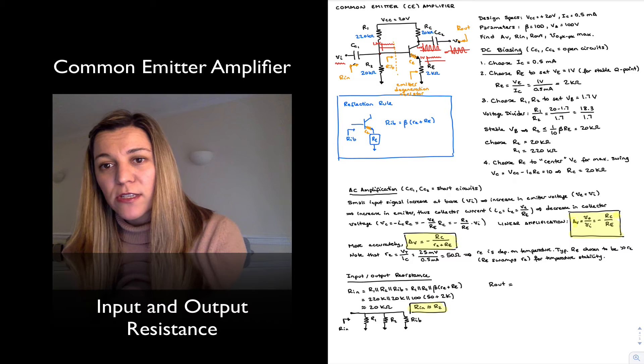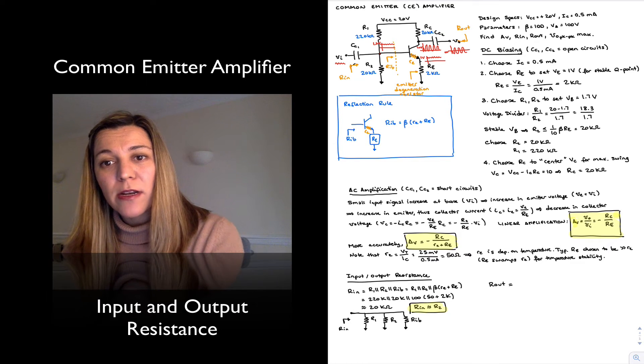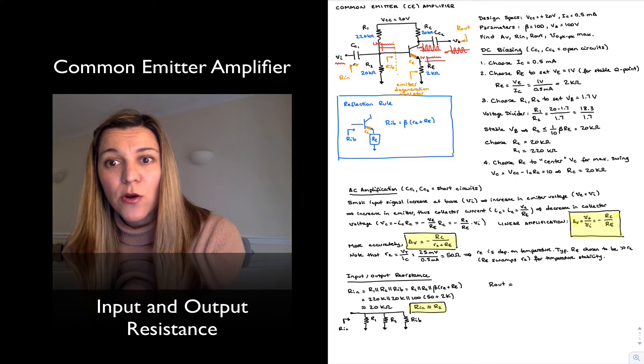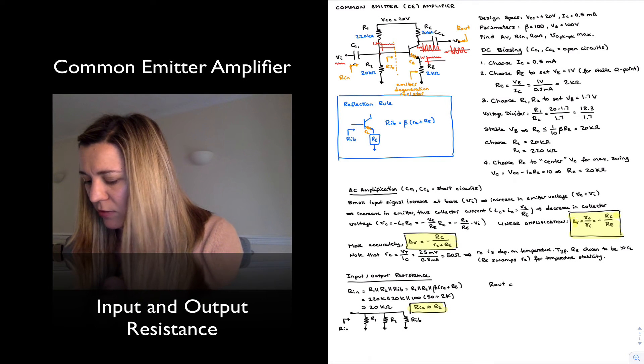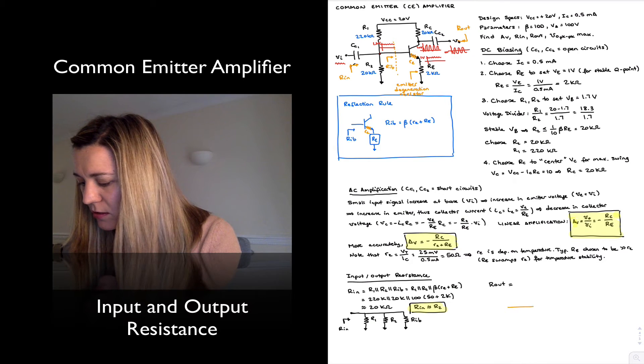And if you remember the hybrid pi model, when I look into the collector of the transistor, I see an ideal current source in parallel with an output resistance little ro. An ideal current source will have an output resistance of infinity, so it'll be like an open circuit, and so basically what I'm left with is...